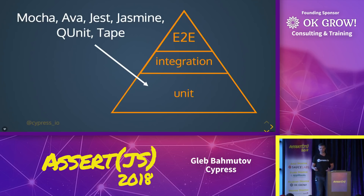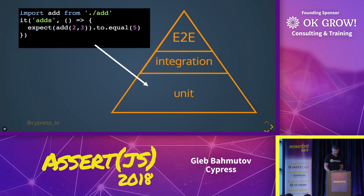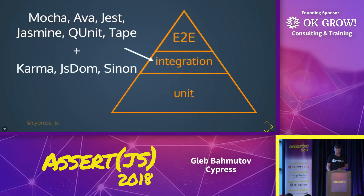In the JavaScript world, we have good unit test runners. Mocha is our favorite, but Jest is excellent, Ava is excellent, and Jasmine is very useful. A unit test is very simple: get a piece of code, run it, assert the result.